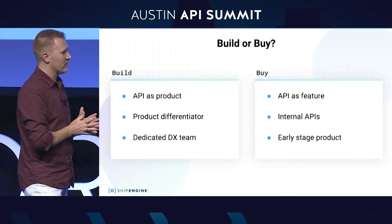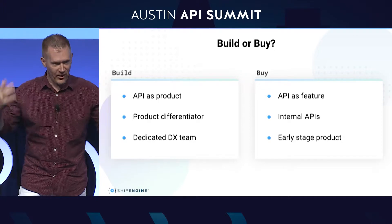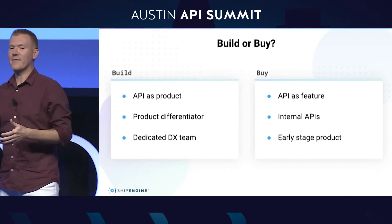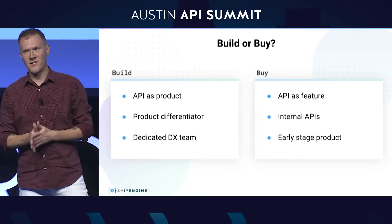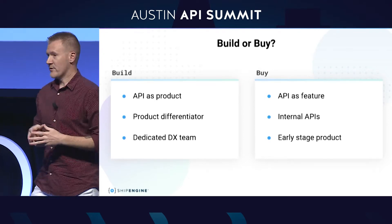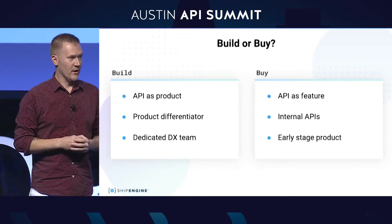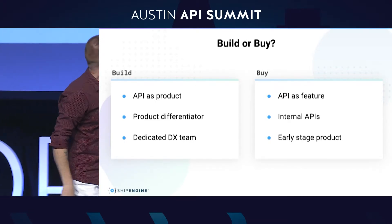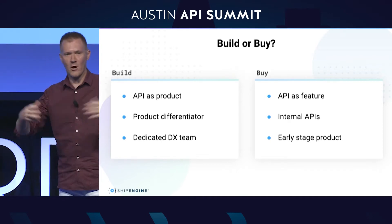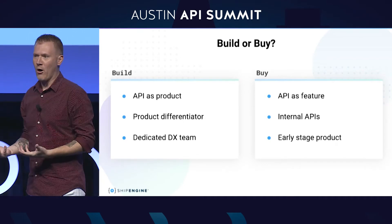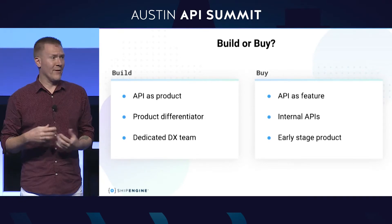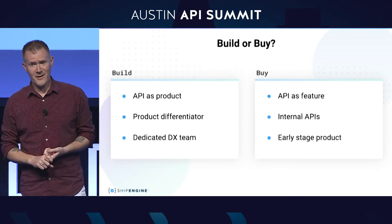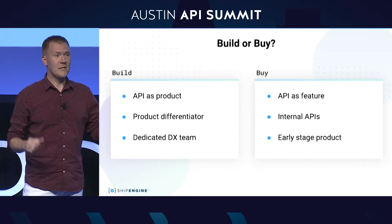My final recommendation on build versus buy: if your API is your product — if that is the thing your company sells — it's probably worth taking the time, effort, and investment to build a custom-tailored documentation platform. It's a good opportunity to differentiate from your competitors and provide a first-class developer experience. The downside is you're going to have to hire a dedicated DX team, which isn't cheap. But for everyone else, buy. If your API is just a feature of your larger product, it's probably not worth the investment — you won't get enough ROI from building your own platform. For internal APIs, auto-generated docs are probably all you need. And if you're an early-stage product, you need to be focused on your core product offering, not on building a bespoke API documentation platform.